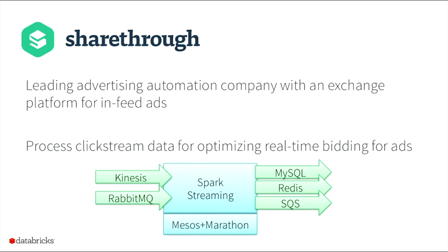One of the oldest production use cases is ShareThru, a leading advertising automation company with an exchange platform for in-feed ads. This exchange platform requires continuously updating exchange bids in real time, for which they use Spark Streaming. They take data from Kinesis — which we added in Spark 1.1 — and they started using it in production within a few months, showing the rapid rate of adoption. They also take data from RabbitMQ and push it out to MySQL, Redis, and Amazon SQS, running on top of Mesos and Marathon.